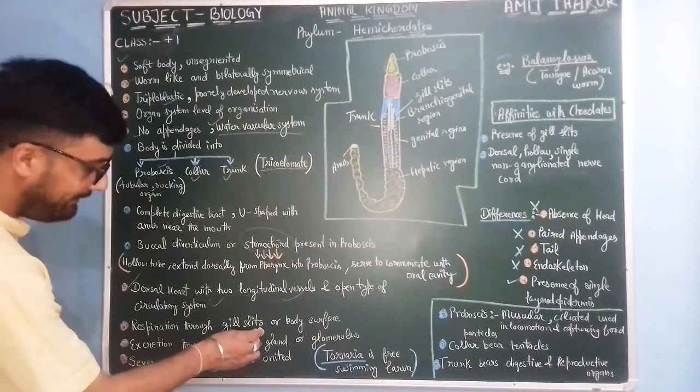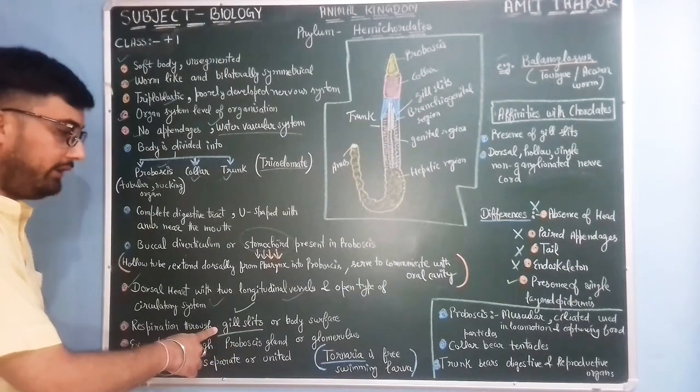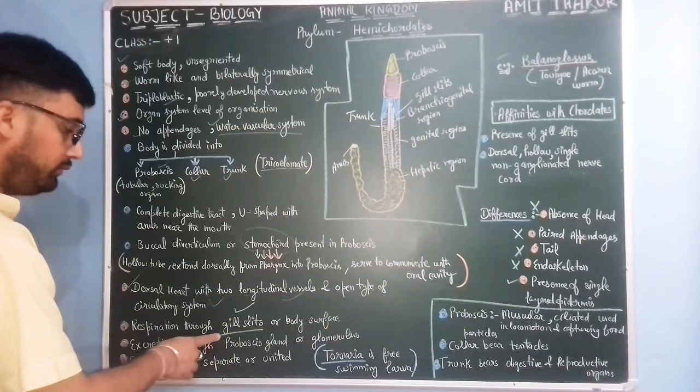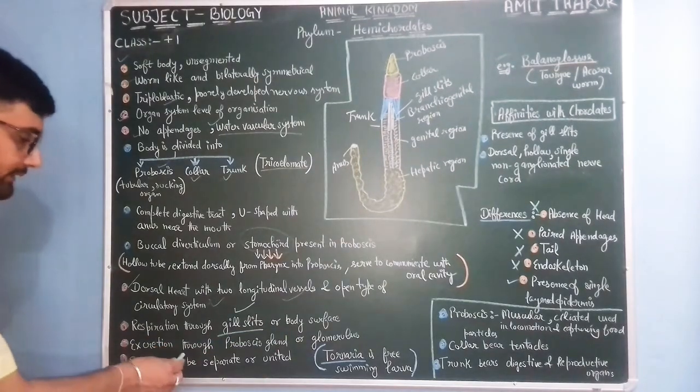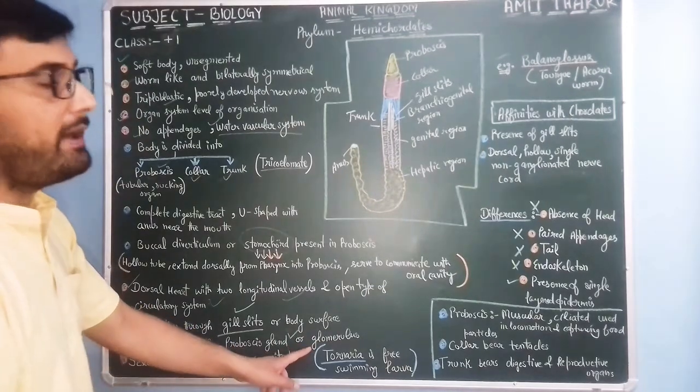Respiration through gill slits, again features of chordates. Respiration occurs through gill slits or body surface, through gill slits or glomerulus.